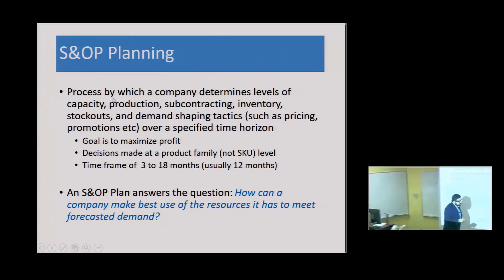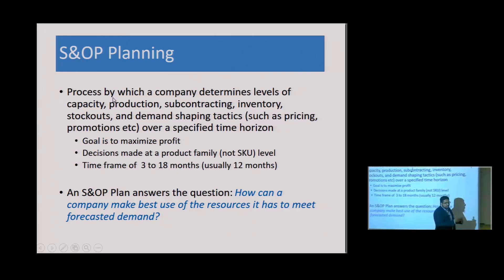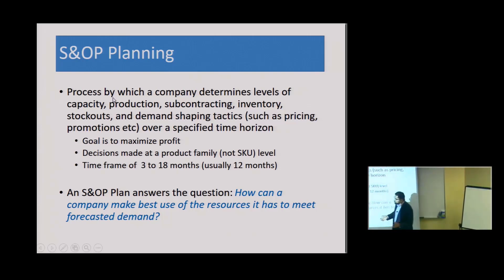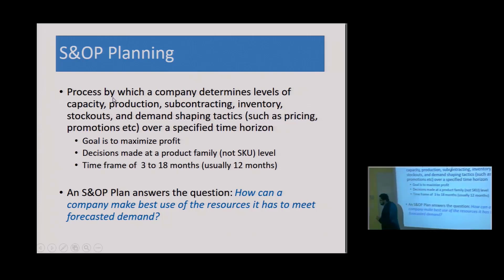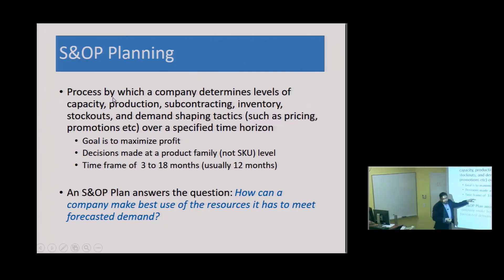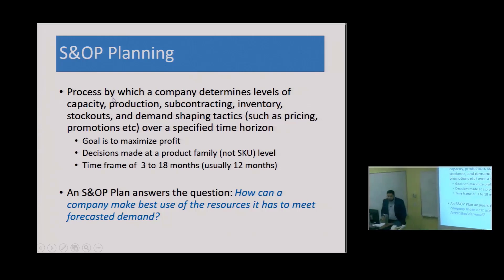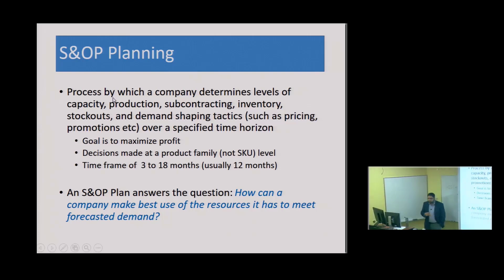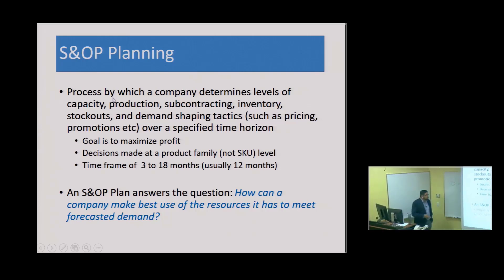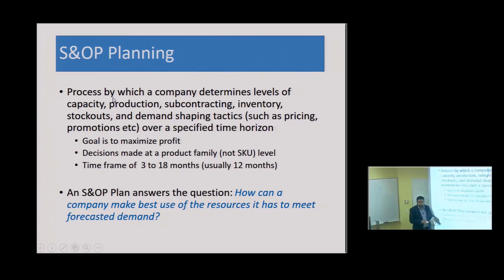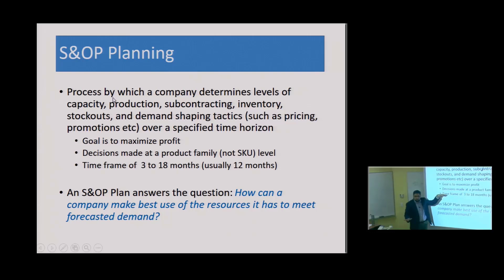Sales and operations planning is called medium-term planning. Short-term planning is next month, next few days, next few weeks; long-term planning is 5 to 10 years. Medium-term means about 3 to 18 months — the most common timeframe is about a year, planning for the next 12 months. The goal is to maximize profit by figuring out how much capacity we need, how many workers, whether to subcontract, and how to maintain inventory levels to meet forecasted demand. All of these things are resources at our disposal that we must marshal to meet demand.